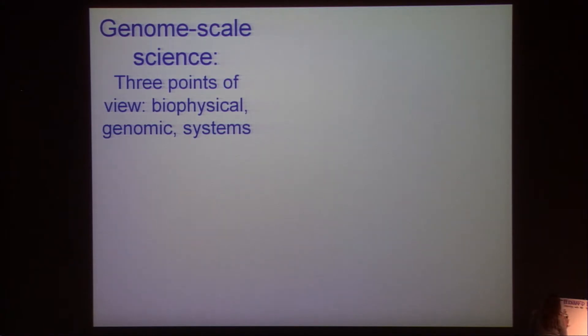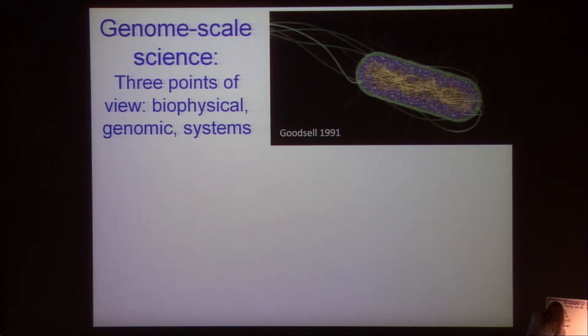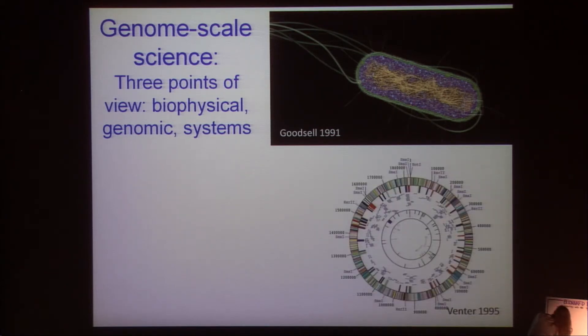In the 90s, we actually saw the beginnings of genome-scale science develop. This image, published in TIPS by David Goodsell, had a big impact on me and many others because this is truly a cell-scale view, maybe a biophysical view. I've never met him — I'd love to talk to him if he is here. Then, of course, Craig Venter came out with the first genome in 1995, and we started getting a genome-scale view from a sequence and annotation standpoint.